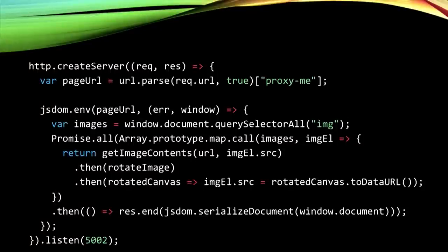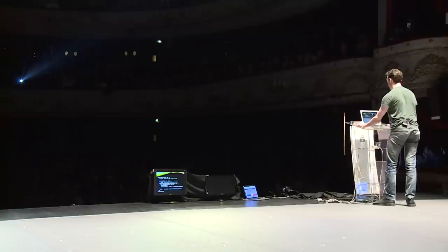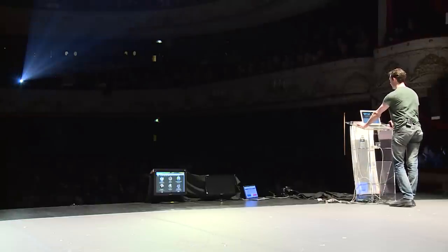Here's an example of using JSDOM in real time as part of a server pipeline — to show you the ultimate power a virtual DOM gives you. This is a quick and dirty HTTP server in Node. It takes any URL you give it and uses JSDOM to flip the images. It uses the JSDOM canvas implementation — and yes, we have a canvas implementation — to take the image src, download the image, put it in a canvas, flip the canvas, convert the canvas to a data URL, put that back in the src attribute, and then serialize the document back out to standard output. And indeed, if you run this, it works.